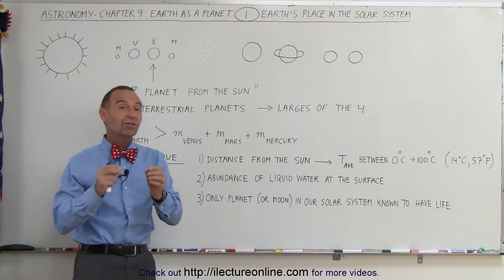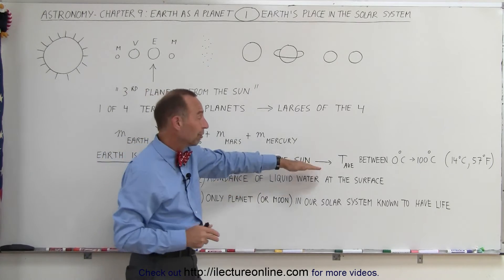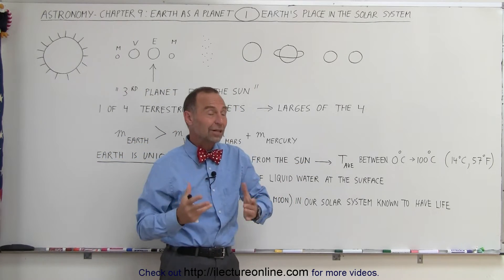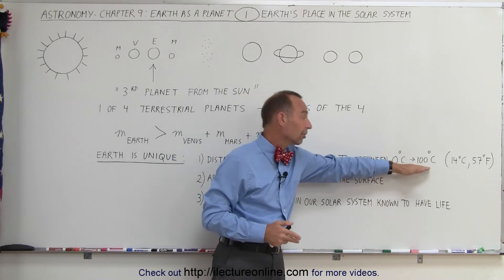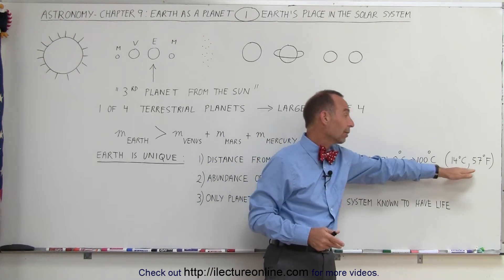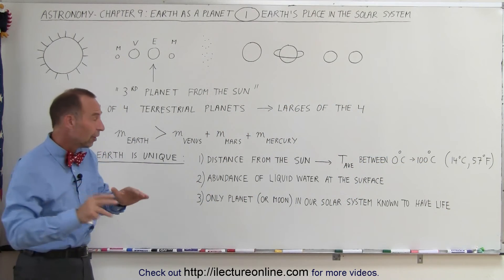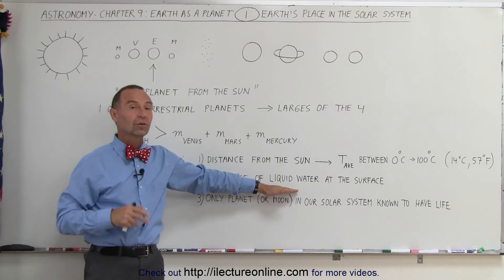Now, why that's especially important for the Earth is that the Earth has a lot of water, and because the average temperature, and for most of the surface, day or night, the temperature is between zero and 100 degrees centigrade, with an average temperature of 14 degrees centigrade or 57 degrees Fahrenheit, it causes most of that water on the surface to be in liquid condition.